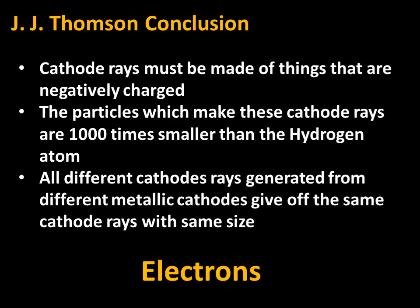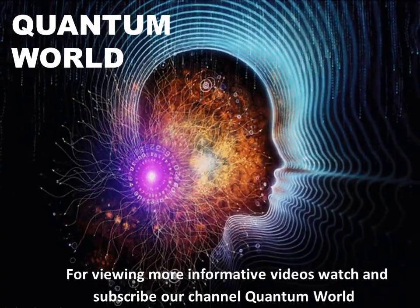The key question is: why did Thomson conclude that electrons would be found in all atoms? The answer is that Thomson tried changing the cathode material, which is the source of the particles. Since the same particles were emitted even when the cathode material was changed to a different matter, Thomson concluded that electrons are a fundamental particle of all atoms.